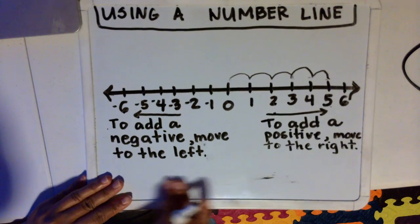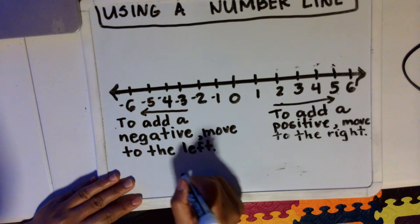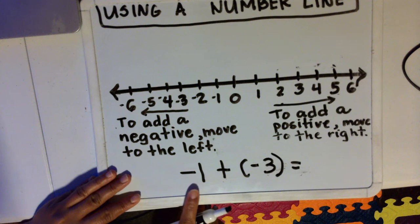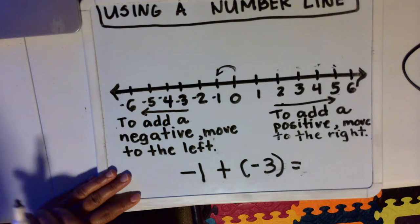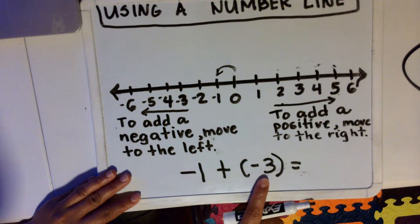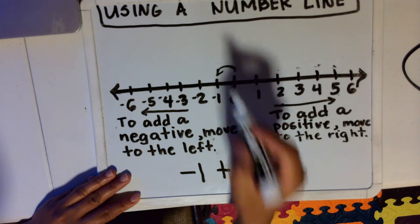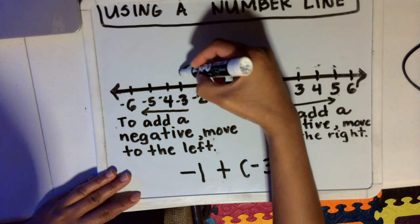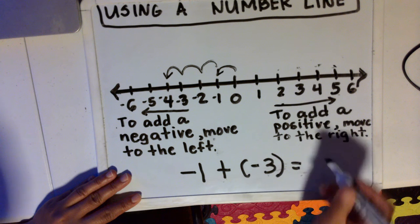Let's have another example. What if we have two negative numbers? For example, negative one plus negative three. First, we model negative one on the number line. Negative one on the number line means from zero to negative one. And then we are going to add a negative three — that means three steps going to the left. So we move three steps: one, two, three. Our endpoint is negative four. So negative one plus negative three is negative four.